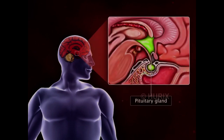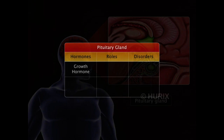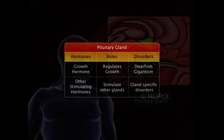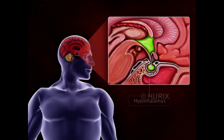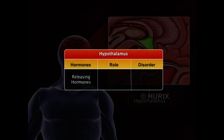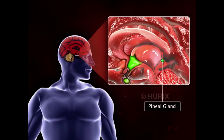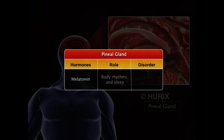The pituitary gland, also called the master gland, secretes many hormones that control growth and also regulate the functions of other endocrine glands. The hypothalamus is the major link between the nervous and endocrine systems — hormones released by the hypothalamus give signals to the pituitary and maintain homeostasis. The pineal gland, a very small gland in the cerebral region of the brain, plays a role in sleep and body rhythms.